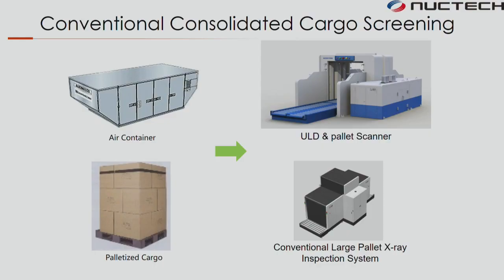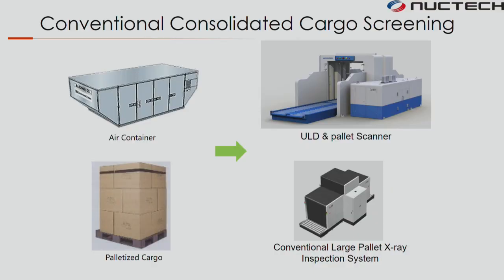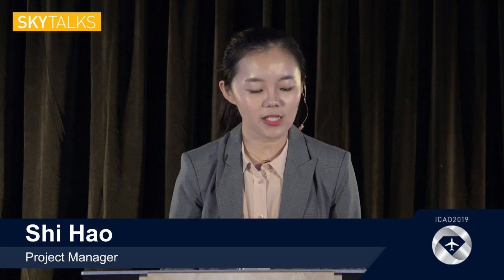Some consignors use ULD screening machines or large pallet X-ray machines for consolidated screening. But cargo contents are highly variable, disordered and cluttered. This kind of machine can only generate a 2D image, which is not clear enough for image analysis operators — the image is overlapping. Due to technology limitations, the automatic alarm function for threat items cannot be realized, so it is hard for the image analysis operator to make a resolution.